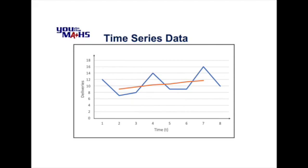Making the decision for a three-point moving average in this case was quite simple because our data did come in blocks of three. But what would we do if we chose another type of moving average? Let's look at the same set of scores but this time try a four-point moving average and see what occurs when we graph that result.